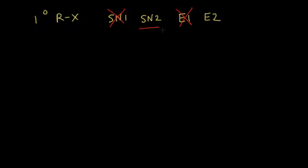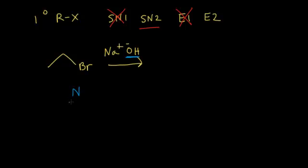SN2 reactions are inherently favored. Let's look at an example. So we'll do bromoethane here. If we react bromoethane with sodium hydroxide, our task is to figure out the product. The first thing to do is to identify your nucleophile. The hydroxide anion would be our nucleophile. It has a negative 1 formal charge, so it's probably a strong nucleophile, just like we saw in the last video. A strong nucleophile would make you think of an SN2 reaction, because SN2 mechanisms require strong nucleophiles.